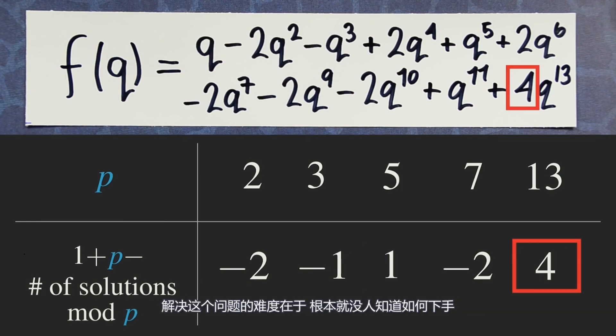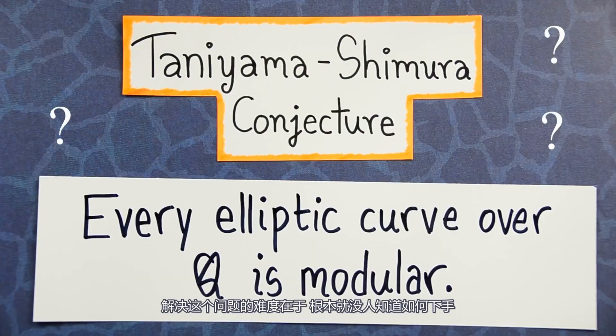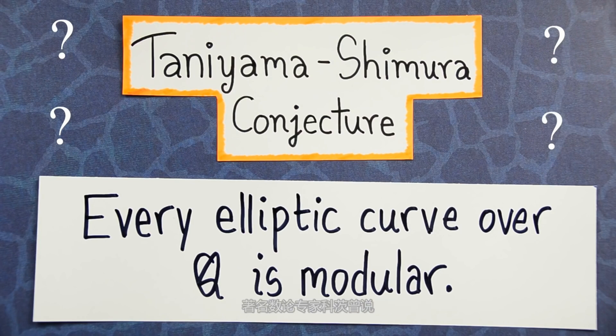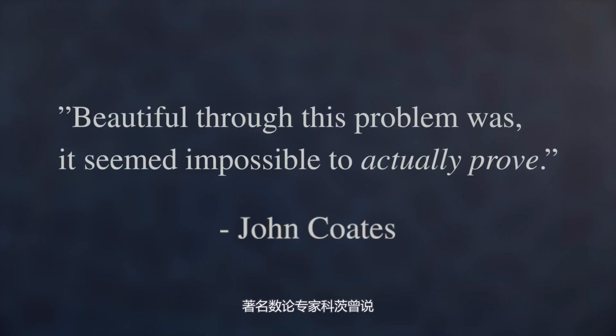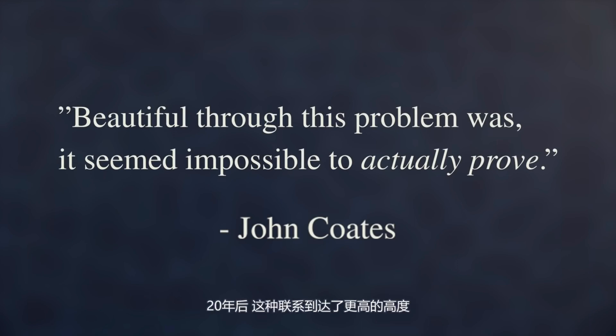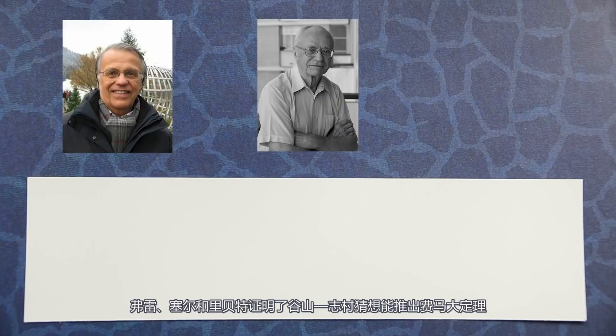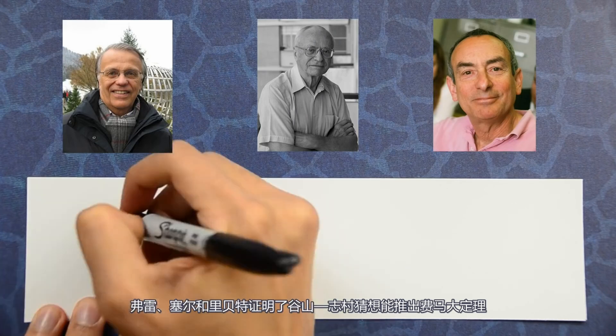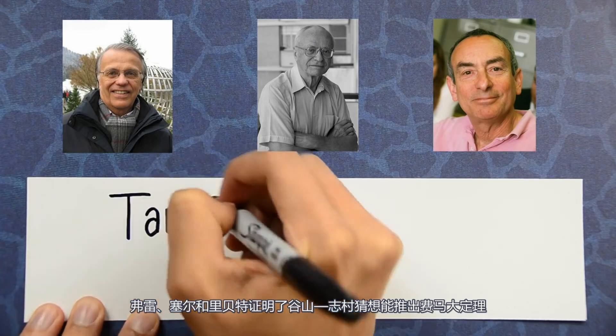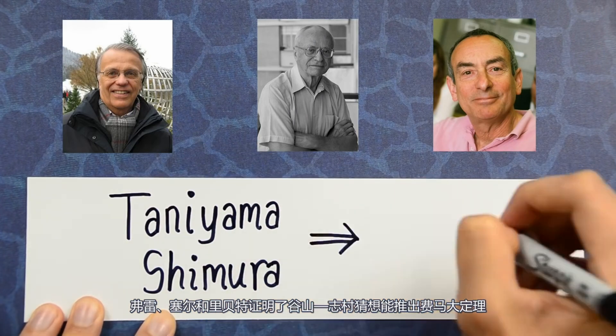The trouble with this conjecture is that nobody knew how to begin attacking it. John Coates, a very well-known number theorist, said: 'Beautiful though this problem was, it seemed impossible to actually prove.' And then 20 years later, the stakes were raised even higher, when Frey, Serre, and finally Ribet showed that the Taniyama-Shimura conjecture implied Fermat's Last Theorem.